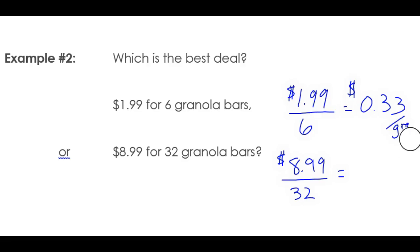In the second case, $8.99 for 32 bars—per bar that's going to cost me 28 cents. So I know that by going for the larger size package, I have the better deal. Which is the best deal? It's the $8.99 for the box of 32.